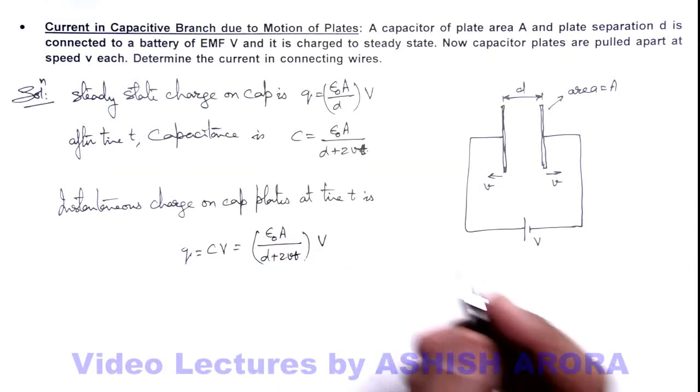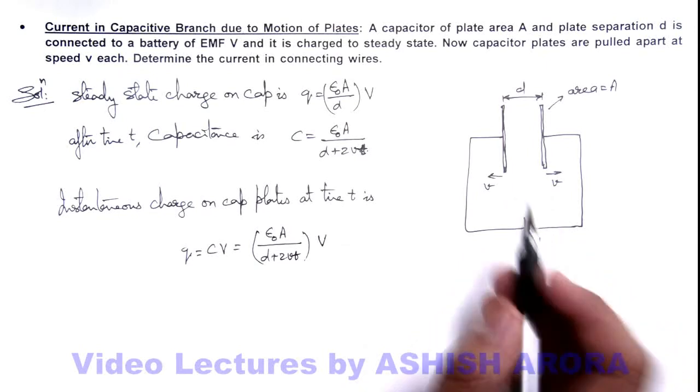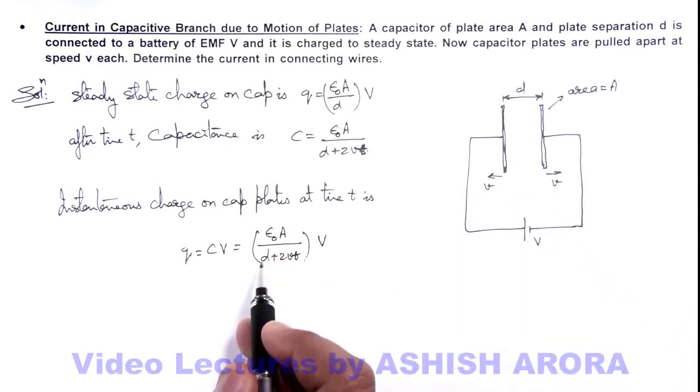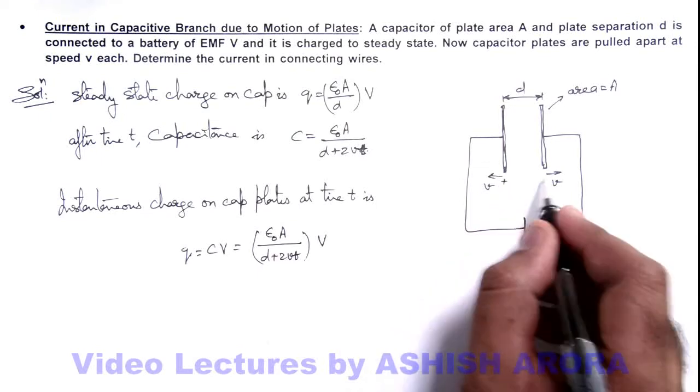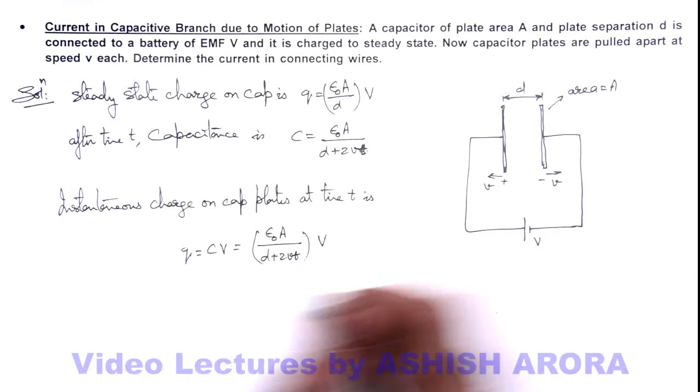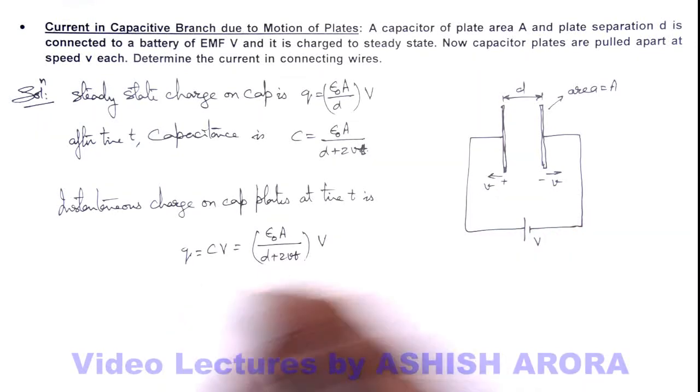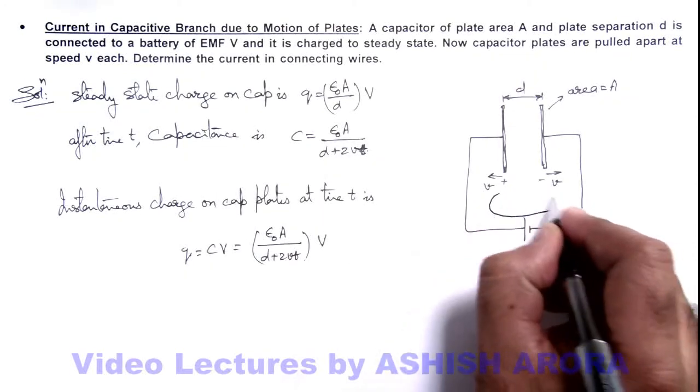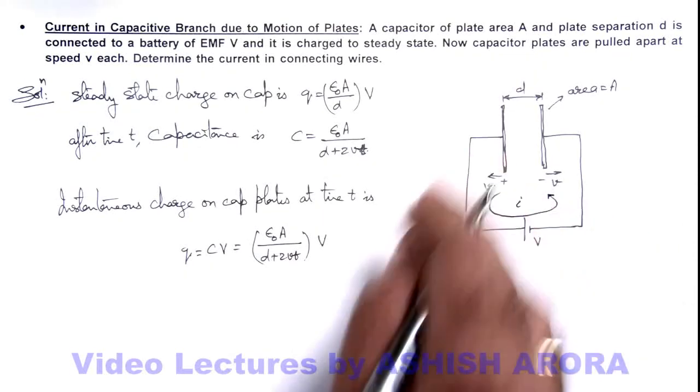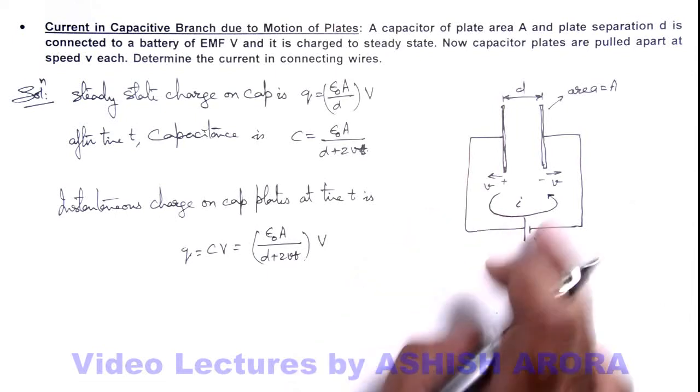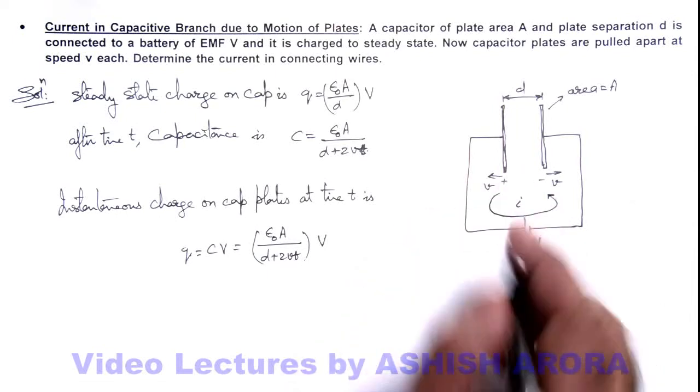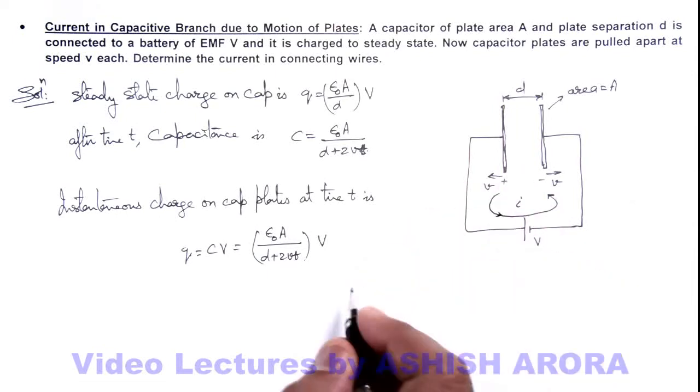And if we wish to calculate the current in the circuit, as we can see the capacitance is decreasing, the current would be flowing in opposite direction. Because as C is decreasing with time, the charge will also decrease, so current will flow from positive to negative terminal, or it'll be flowing opposite to the direction of battery potential difference.